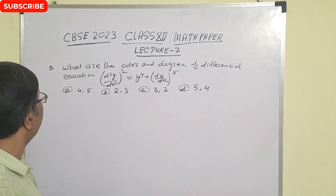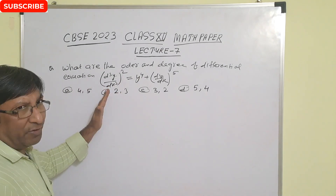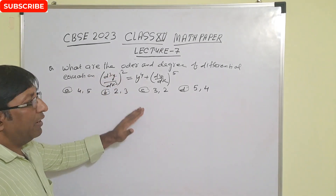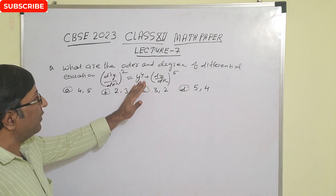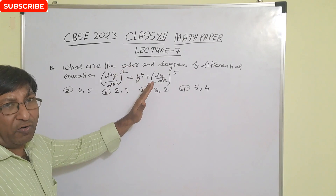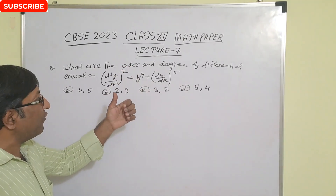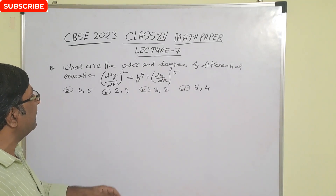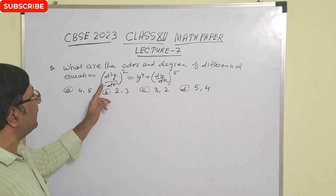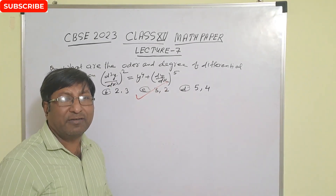Final question: what are the order and degree of the differential equation (d³y/dx³)² = y⁴ + (dy/dx)^5? The order is determined by the highest derivative, which is d³y/dx³, so order = 3. The degree is the power of the highest derivative, which is 2. So order is 3 and degree is 2. The correct answer is option C.